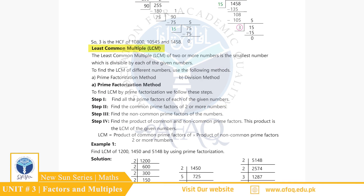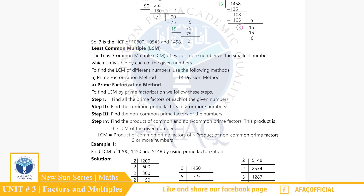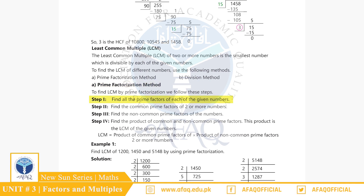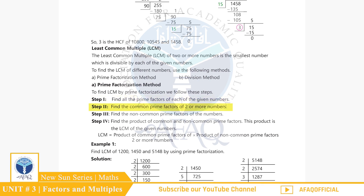اگلا topic ہے Least Common Multiple (LCM)۔ دو یا زیادہ numbers کا LCM وہ چھوٹے سے چھوٹا number ہوگا جو ان numbers کو برابر تقسیم کرے۔ LCM find کرنے کا پہلا طریقہ ہے Prime Factorization Method۔ Step 1: تمام دی ہوئے numbers کے prime factors معلوم کریں۔ Step 2: common prime factors معلوم کریں۔